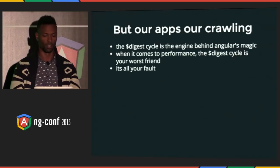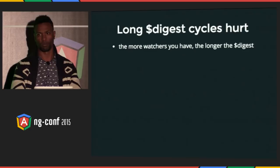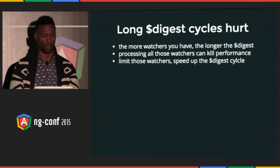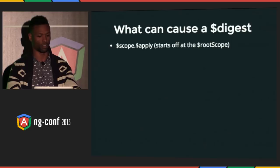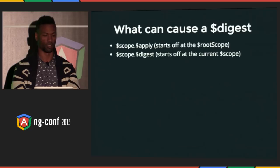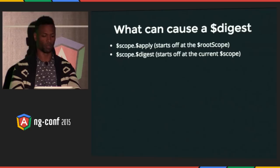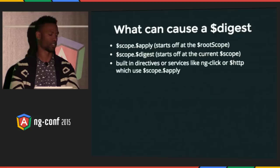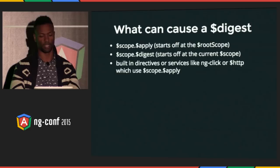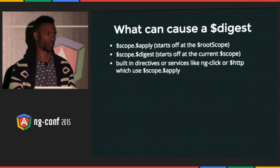It's all your fault — not Misko's fault, not the Angular team's fault. Long digest cycles hurt: the more watches you have, the longer the digest, and processing all those watchers can kill performance. We want to limit those watchers and speed up the digest cycle. Things that can cause a digest: scope.$apply starts a digest at the root scope, scope.$digest starts at the current scope and goes down to its children — more performant if used right. Built-in directives like ng-click and $http use scope.$apply internally. We have control over this, so we need to be more aware.